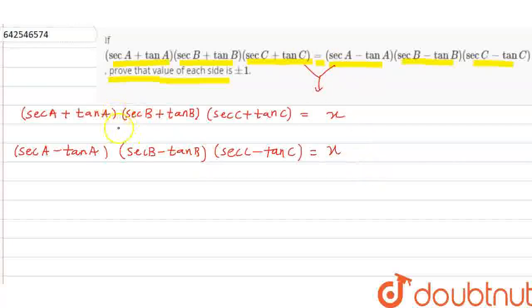Now what we do is, just multiply these two. So what we get? We get sec A plus tan A into sec A minus tan A. Now apply what formula? A square minus B square.